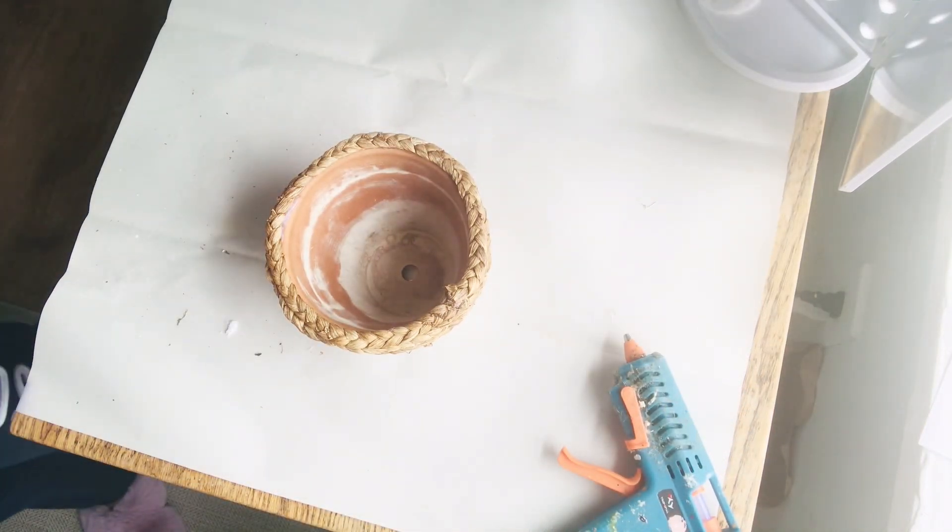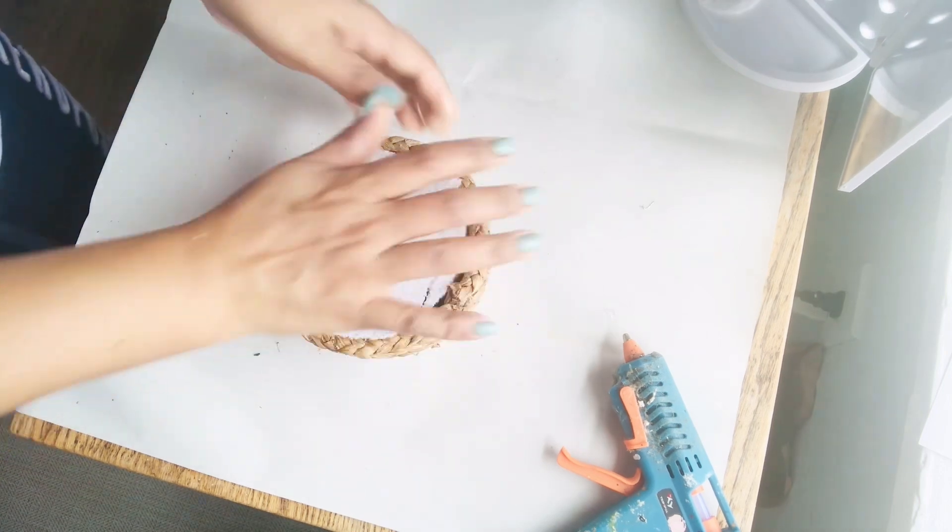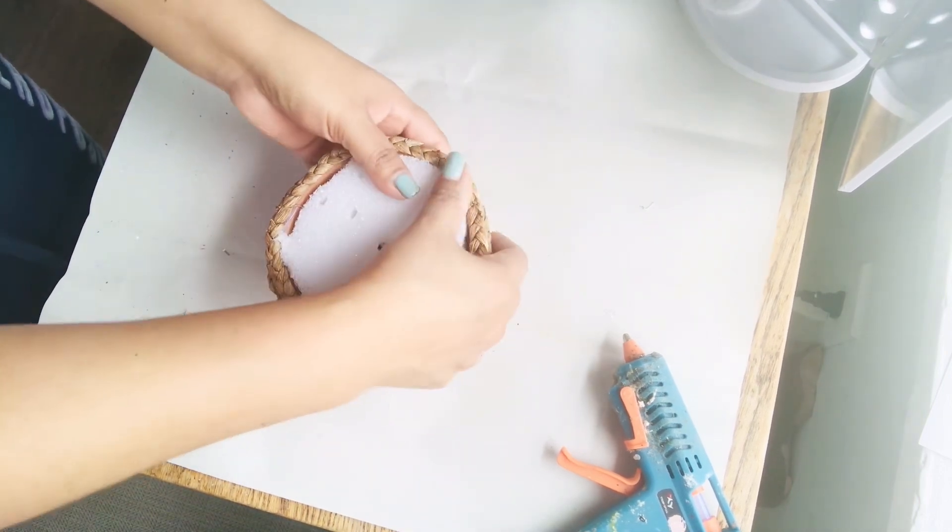Now I'm going to start making the planter. But first I'm going to add a little bit of styrofoam, then I'm going to use foliage that I got from the Dollar Tree and some from Hobby Lobby.